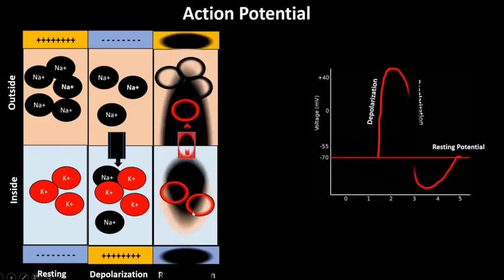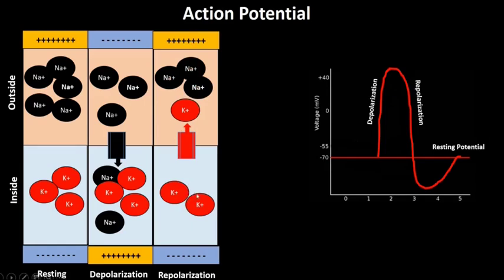If a negative charge is applied, the inside of the axon can become more negative and less positive. When the inside of an axon becomes more negative relative to the outside, it is called a hyperpolarized neuron and this phenomenon is called hyperpolarization. When a specific threshold amount of positive ions flows inside the axon membrane, it causes sudden depolarization, which is followed by a sudden hyperpolarization, and this is called action potential.